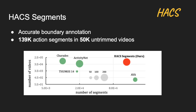HACS Segments is a dataset for action localization and detection tasks. It has accurate boundary annotations on 50,000 untrimmed videos. In total, there are 139,000 action segments annotated.